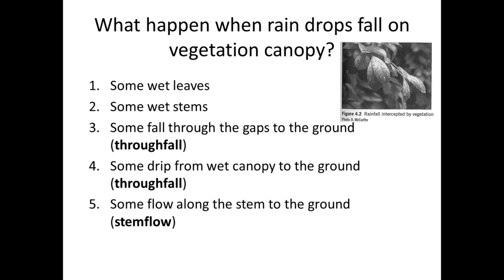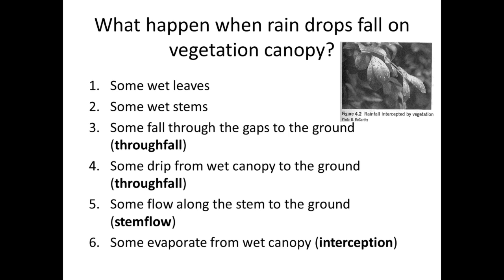Some water may flow along the stem to the ground — there is a term called stemflow. And then some water previously on the leaves or on the stems may evaporate. We call this interception. So here we have three key terminologies: throughfall, stemflow, and interception.